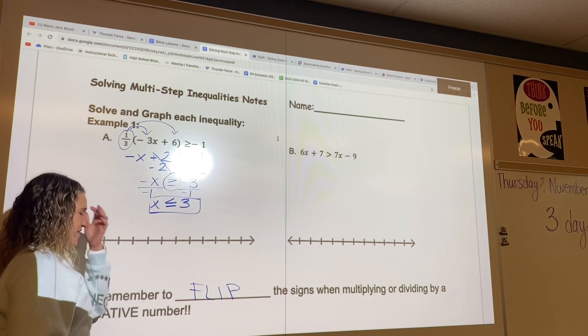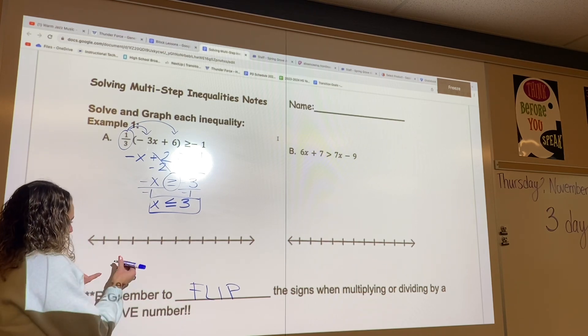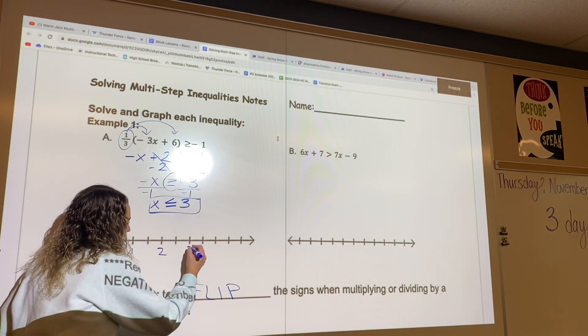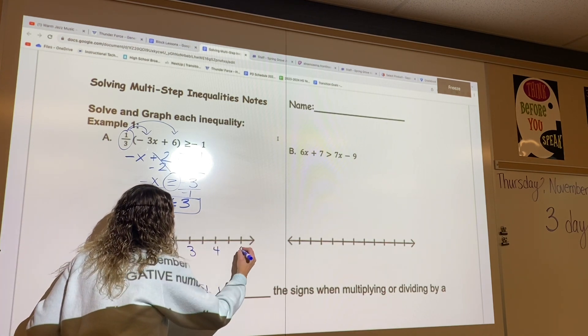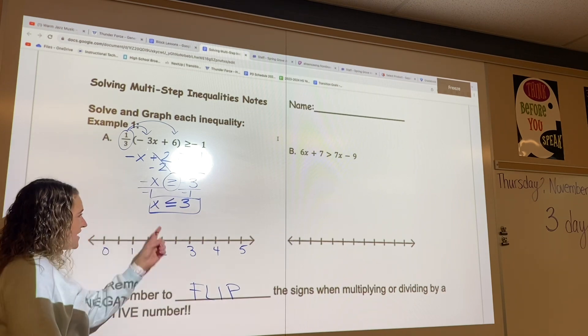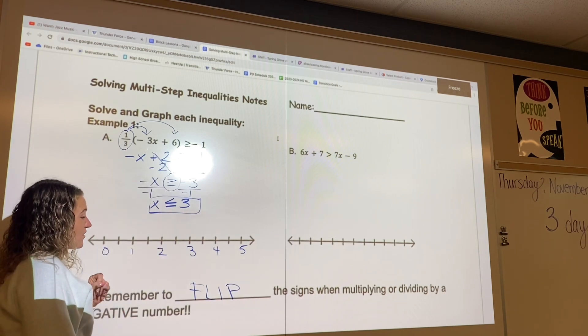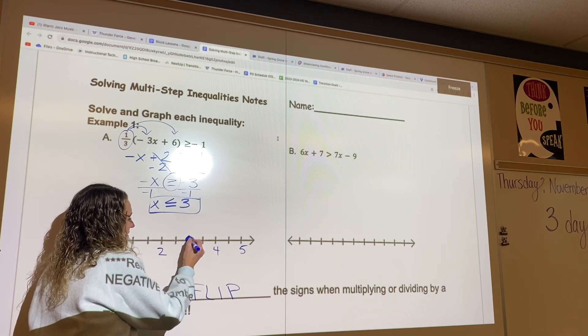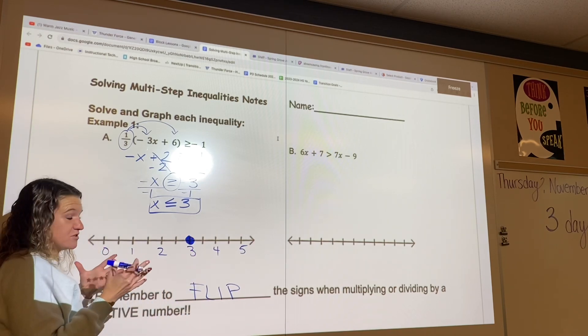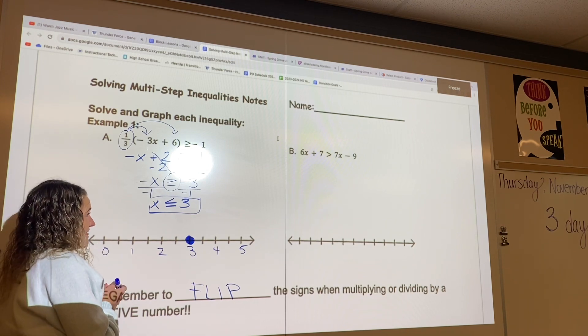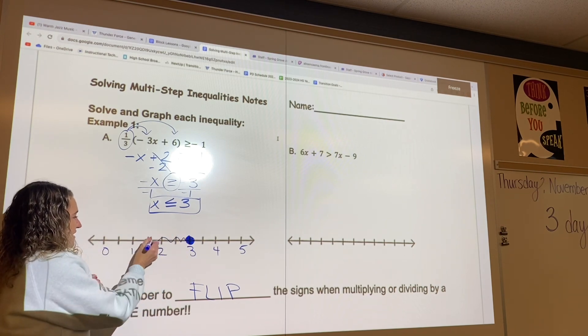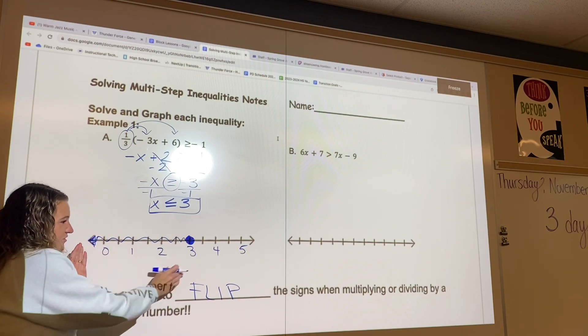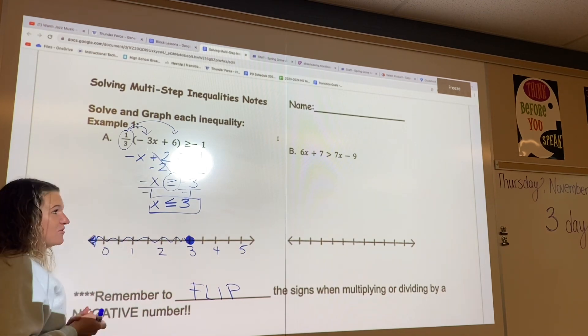All right. So now let's fill out our number line. I'm going to start with 0, 1, 2, 3, and then 4, 5 here. I see that I have the or equal to, so I need to fill in that. That would tell us that 3 is also a solution to that inequality. And then it's less than or equal to, so I'm going to shade to the left. Everything in here, including the 3, are solutions to that inequality.